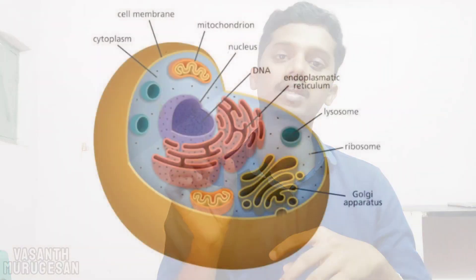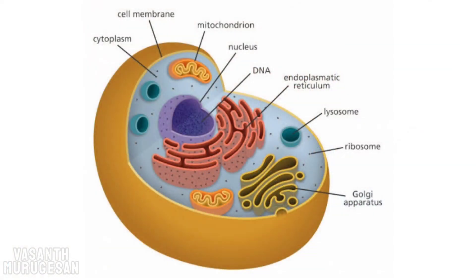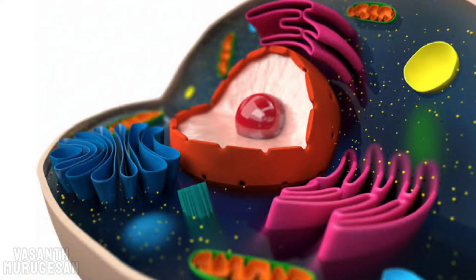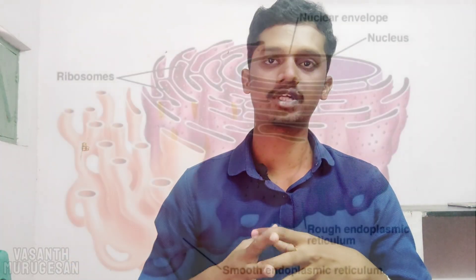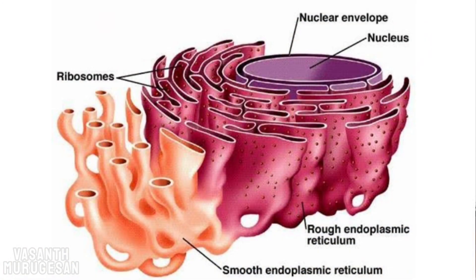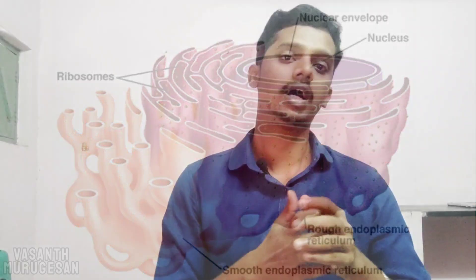In the cytoplasm, there is the Endoplasmic Reticulum. You can define it as the body which has critical and functional roles. There are two types of Endoplasmic Reticulum: Rough Endoplasmic Reticulum and Smooth Endoplasmic Reticulum, and the two are interconnected.